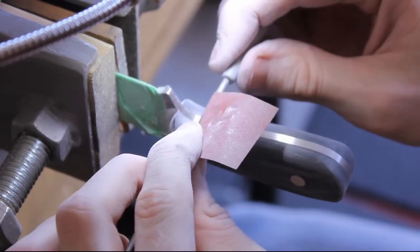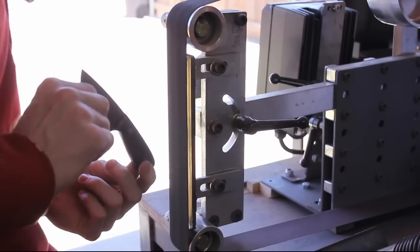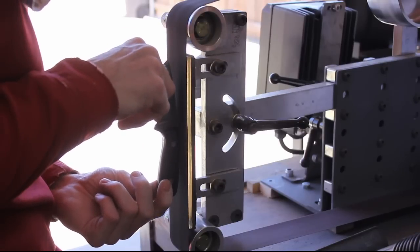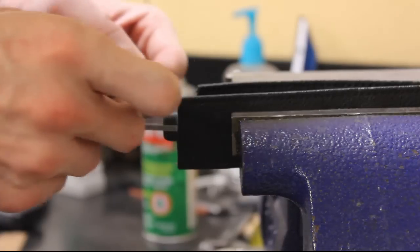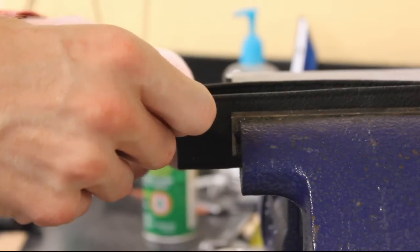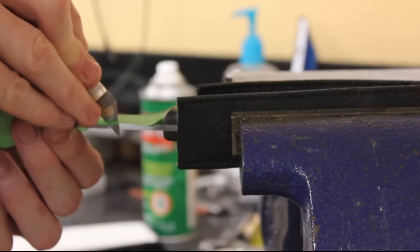After I get all the hand sanding done on the scales, I'll head back over to the belt sander and then just clean up the entire spine because half of that spine still had some stone washing on it so I wanted to get the whole spine to a satin finish.